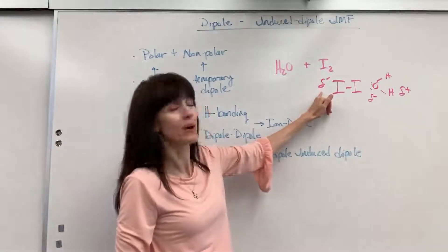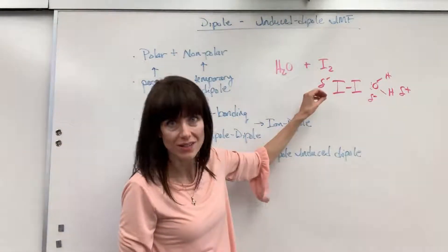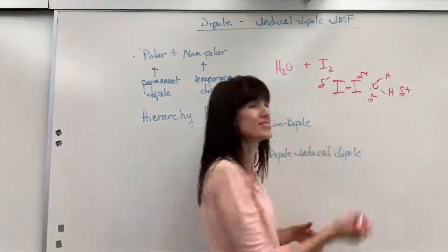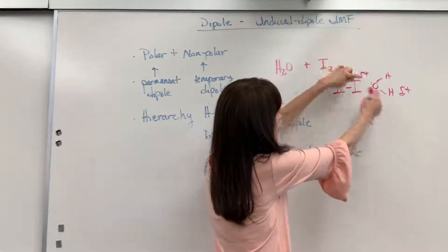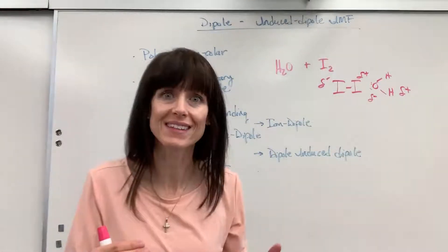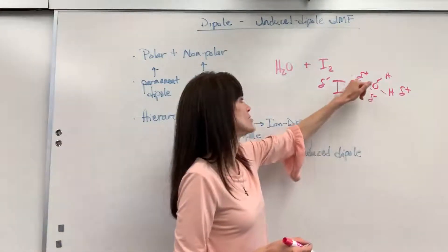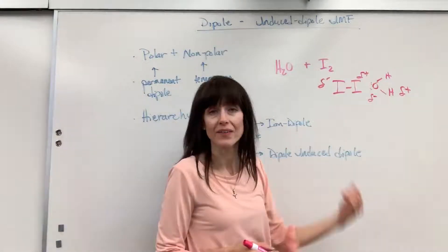So this is going to become a partial negative. We're going to have an uneven distribution of electrons. Now, those electrons are repelled over here, which creates, induces, a partial positive on the iodine. And for just a second, boom, those attract. You're going to have that partial negative on the permanent water attracted to that partial positive on that temporary dipole on the iodine.